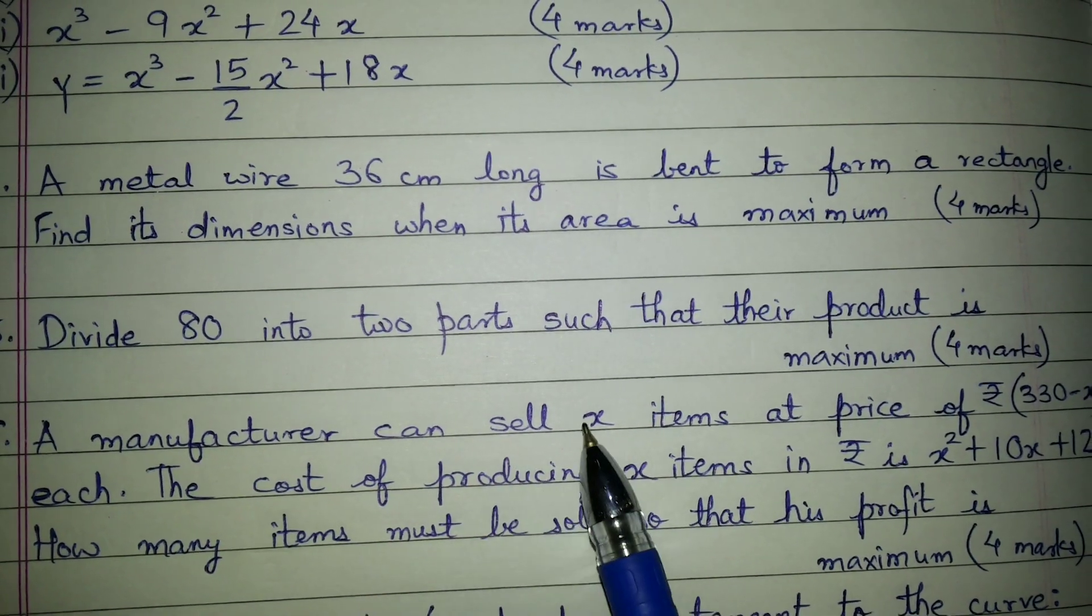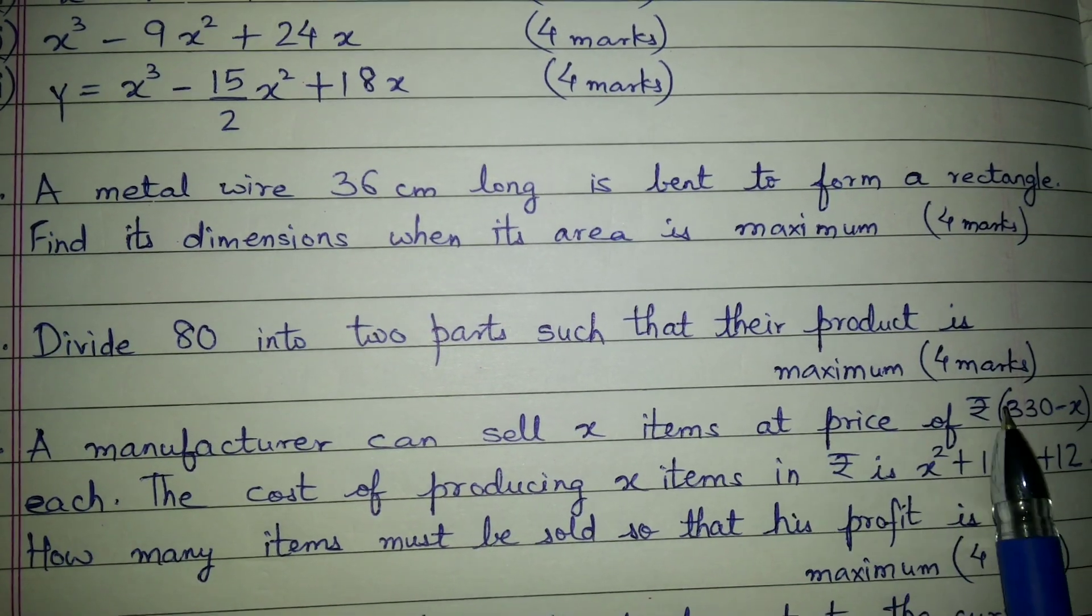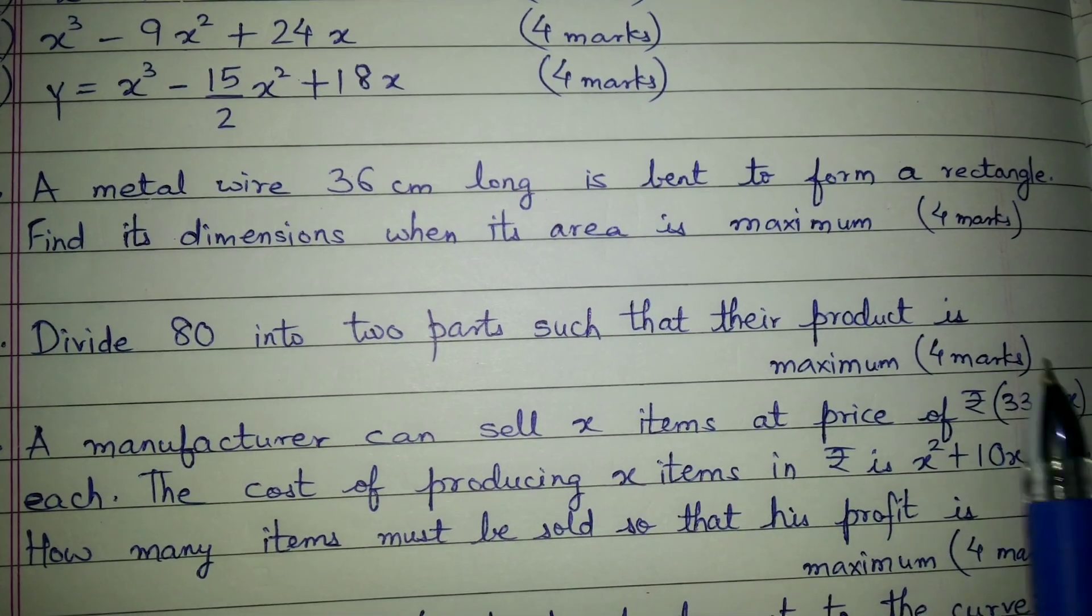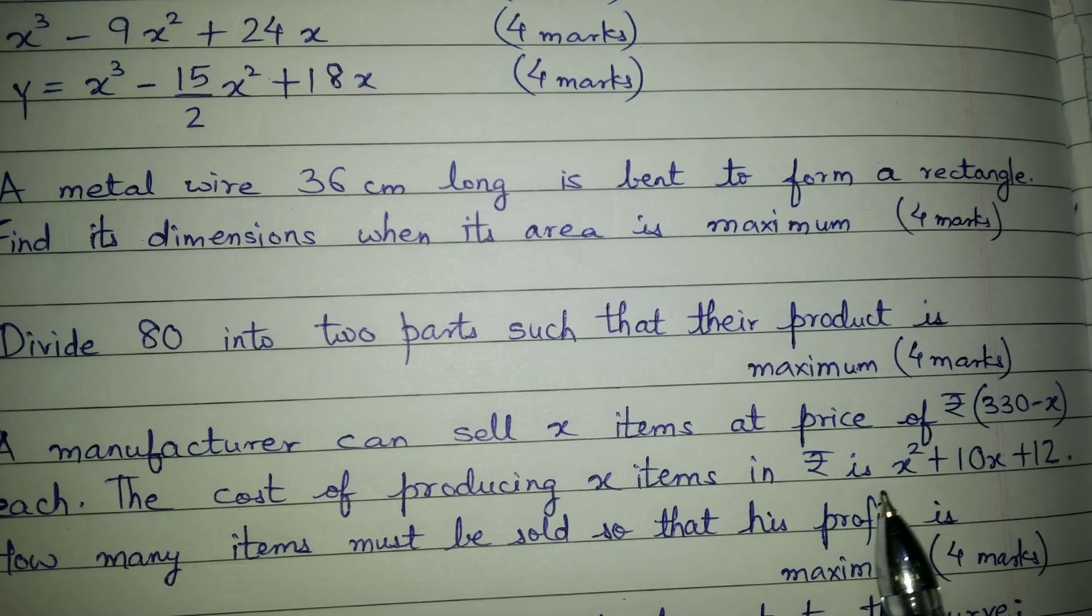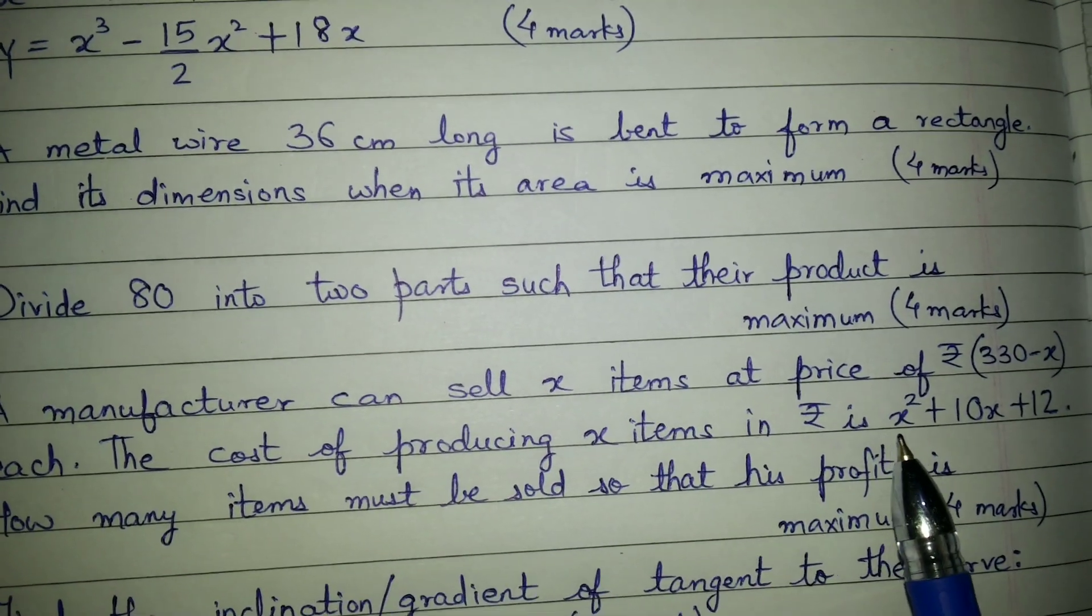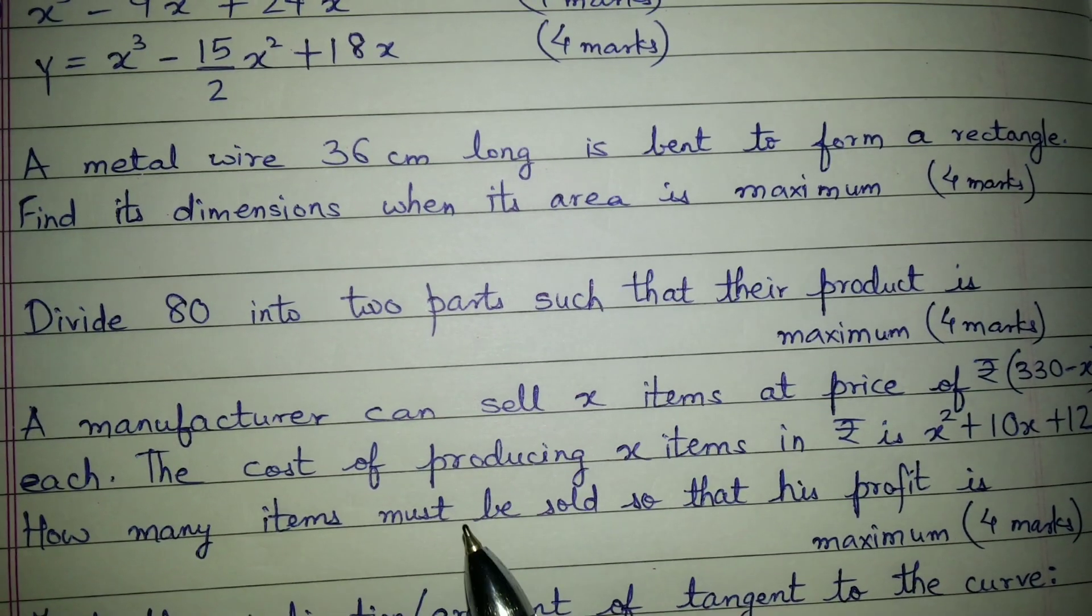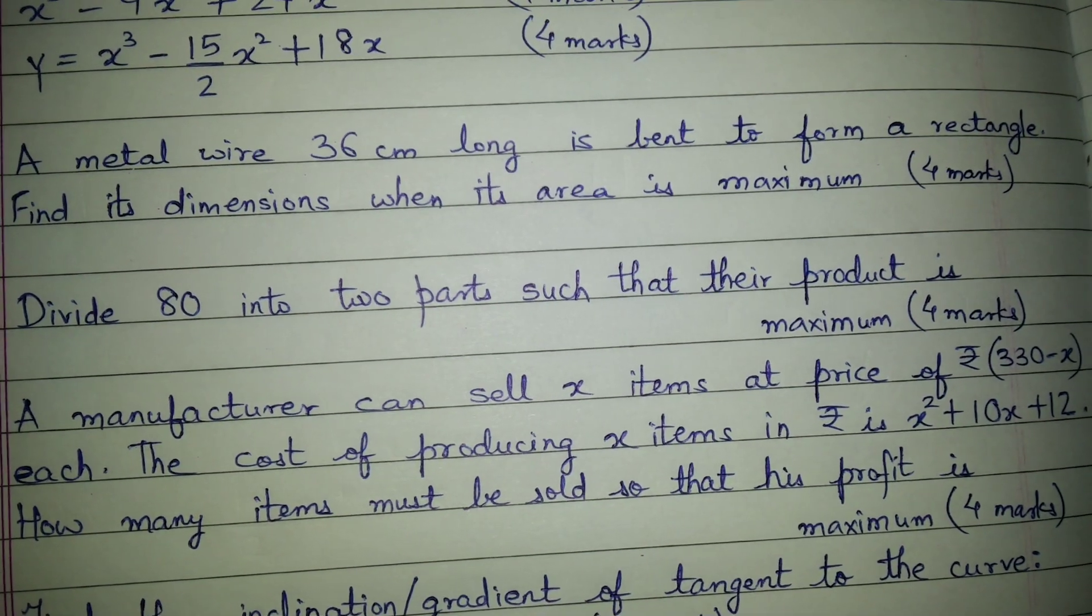A manufacturer can sell x items at a price of rupees 330 minus x each. The cost of producing x items in rupees is x square plus 10x plus 12. How many items must be sold so that his profit is maximum.